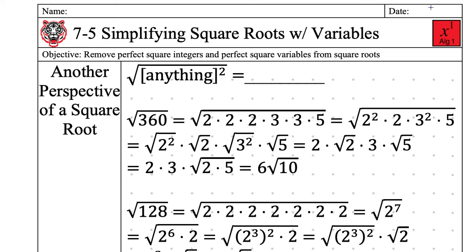We are in Algebra 1. Today's date is Wednesday, January 29th, 2020. We are on Lesson 7-5: simplifying square roots with variables. Tomorrow is going to be the penultimate level, 7-6, where we simplify square roots with expressions. Our objective today — Wyatt had it first — is to remove perfect square integers and perfect square variables from the square root.